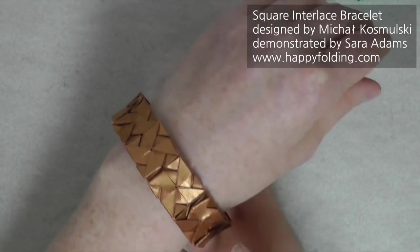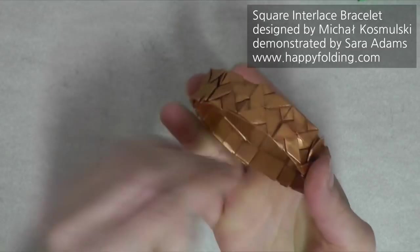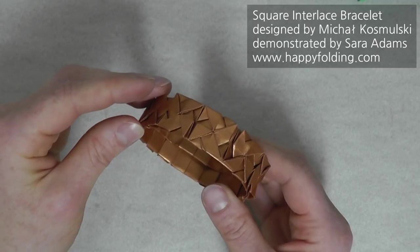By the way, if you're wondering what paper I used for this bracelet, it's called Star Dream. But you could achieve a similar effect using, for example, bronze acrylic paint on simple paper.